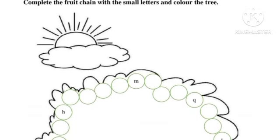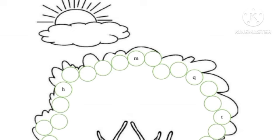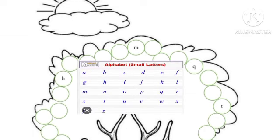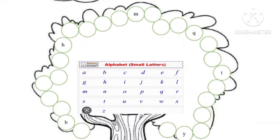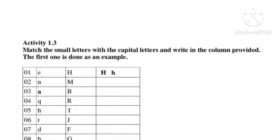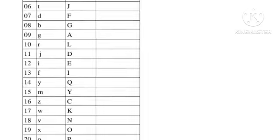Complete the fruit chain with the small letters and color the tree. You have to color this and write from your left side to the right side in small letters: A, B, C, D.